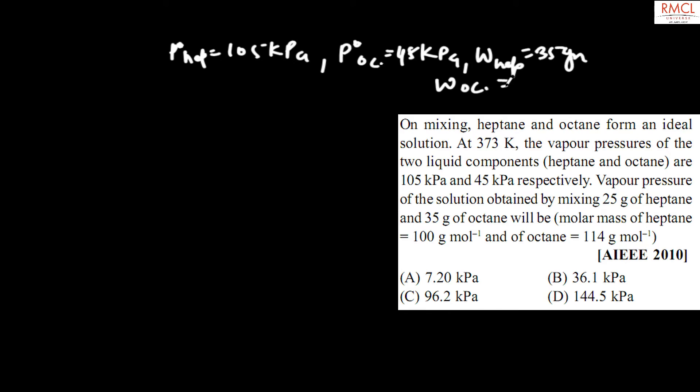Now we calculate moles. N heptane is 25 divided by 100, which equals 0.25. For octane, it equals 35 divided by 114, which equals 0.30. Now we add these values.